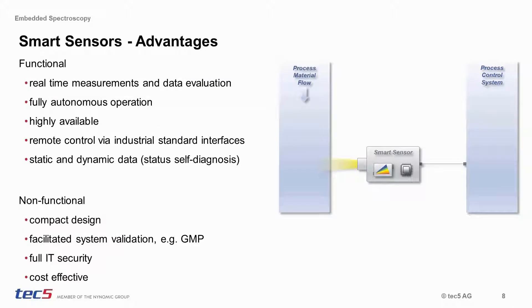Process sensors based on embedded technology guarantee high availability with nearly no or significantly reduced downtime of the manufacturing line. They can not only be used for continuous processes — they are also ideally suited for batch manufacturing. As autonomous devices, they will constantly and reliably provide process data in real-time without any delay. A smart sensor system, due to its fully low-level system control, data processing and firmware-based operation, will allow use in compliance with regulatory requirements.